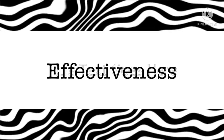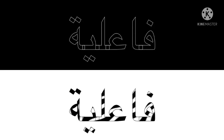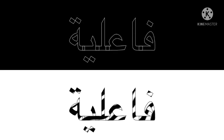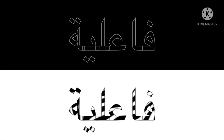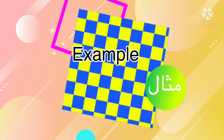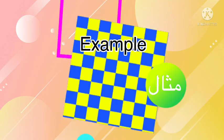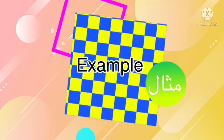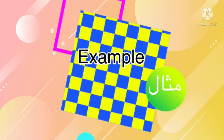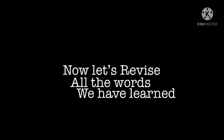Next word we have is 'effectiveness.' Do you know what to call that in Arabic? It is 'fa'aliyya.' Let's repeat — fa'aliyya. Our next word is 'example' in Arabic. Let's repeat. So now let's revise all the words we have learned.